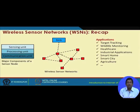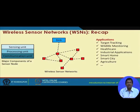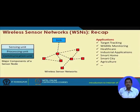In a traditional sensor network, every sensor node has a sensing unit, a processing unit, and a communication unit. The sensing unit senses the environment, the processing unit does basic processing, and the communication unit forwards data to the next-hop neighbor for delivery to the sink. Applications of sensor networks include target tracking, wildlife monitoring, healthcare, industrial applications, smart home, smart city, agriculture, and vehicular networks.